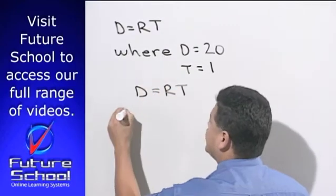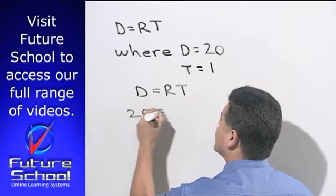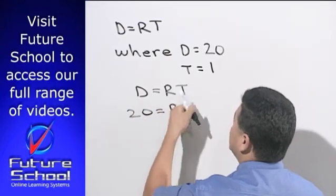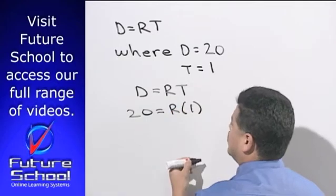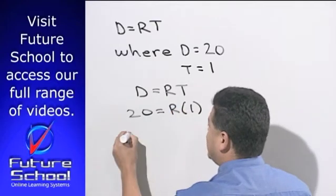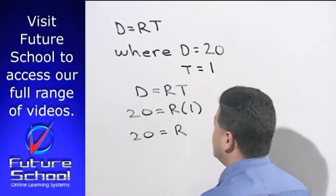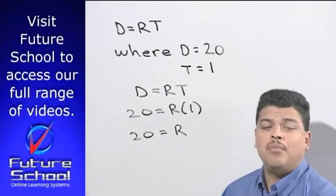Distance equals 20, my rate I do not know, and my time is 1. That means that the rate was equal to 20 miles per hour.